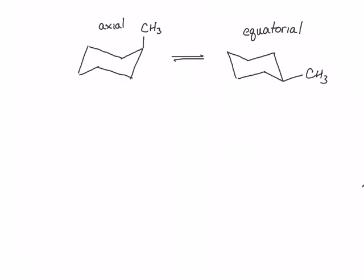When choosing how to draw a Newman projection, you can choose two different views, but you need to make sure that you're choosing one of the bonds that includes the carbon with the methyl substituent. To simplify things, I am going to choose to look at my cyclohexane ring down the carbon-6 to carbon-1 bond. And remember that with a cyclohexane ring there are always two bonds that are parallel, so we'll also be looking down the bond between carbons 4 and 3.